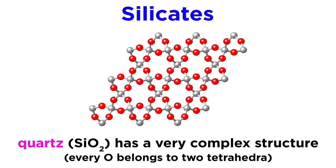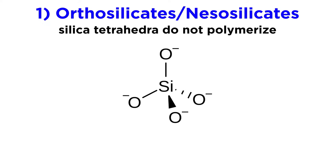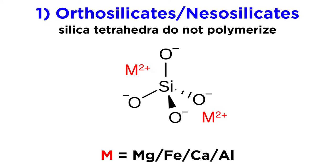We will first discuss the silicates that do not polymerize at all: the orthosilicates. Orthosilicates, also called nesosilicates, are the simplest subclass of silicates, as the silica tetrahedra are not polymerized, meaning there is no sharing of oxygen atoms between silica tetrahedra. Instead, the silica tetrahedra are linked by bonding with cations like magnesium, iron, calcium, and aluminum.